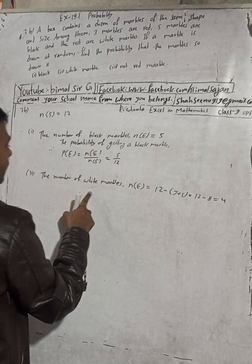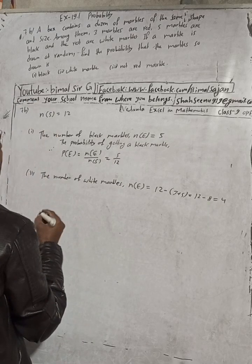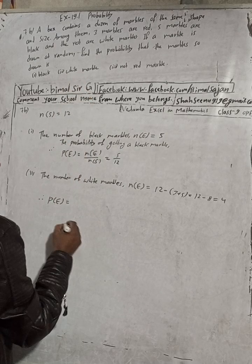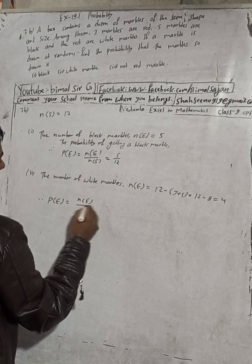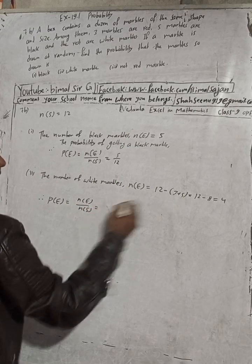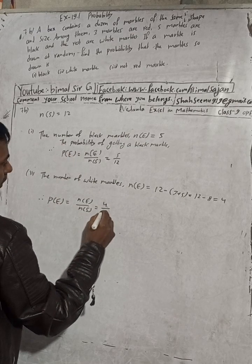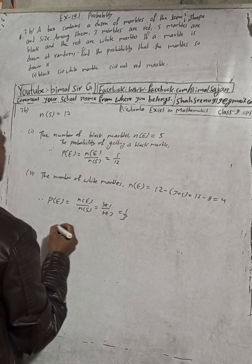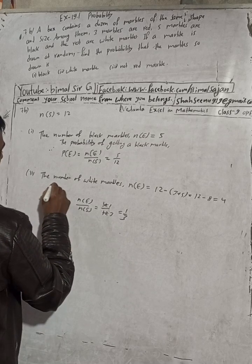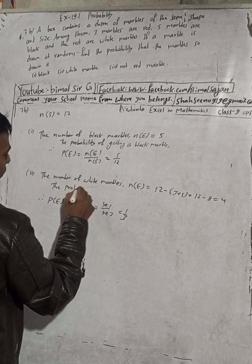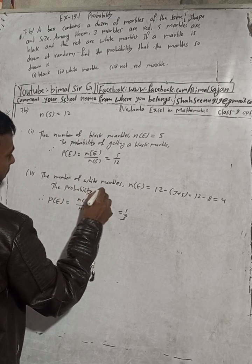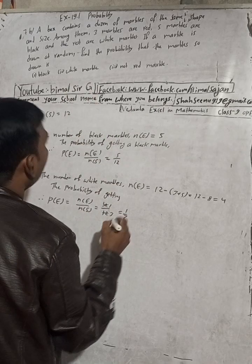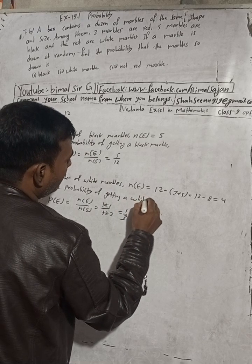Therefore P(E), the probability of white marbles, is equal to n(E) / n(S) = 4/12 = 1/3. The answer is one by three. The probability of getting a white marble is 1/3, which matches the book answer.